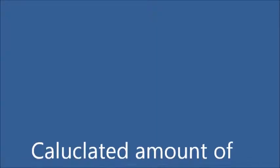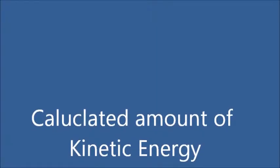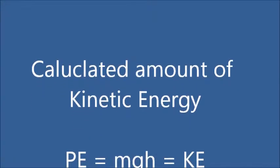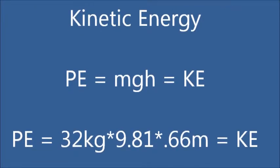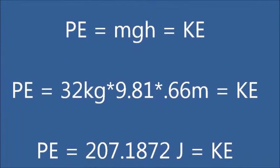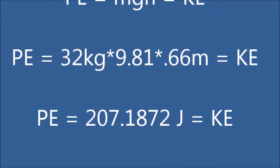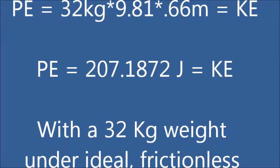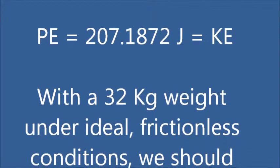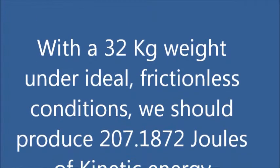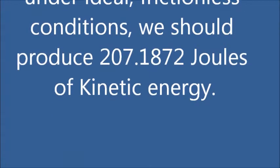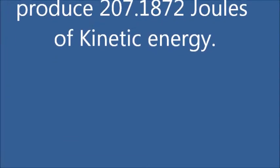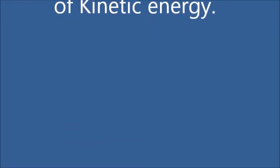The calculated amount of kinetic energy for this experiment: we know the potential energy is the same as the kinetic energy which equals MGH. Since potential energy in this case is 32 kilograms, which is the weight of the counterweight, times 9.81, which is the acceleration of gravity, times 0.66 meters, the distance of the drop, and that all equals the kinetic energy. Therefore, we know that potential energy is 207.1872 joules, which is the same as the kinetic energy. So with a 32 kilogram weight under ideal frictionless conditions, we should be able to produce 207.1872 joules of kinetic energy.